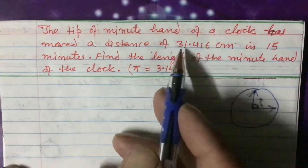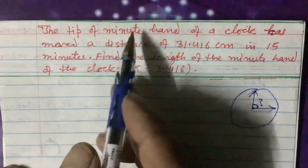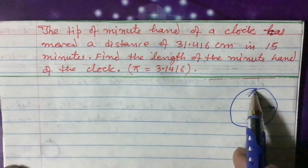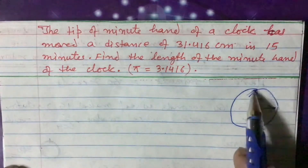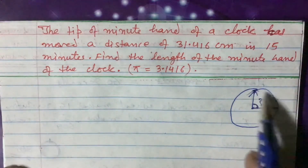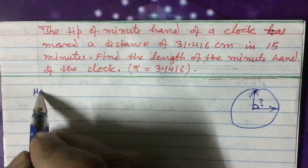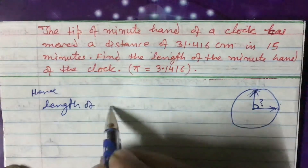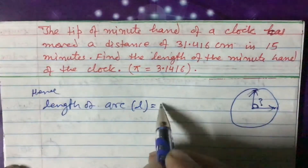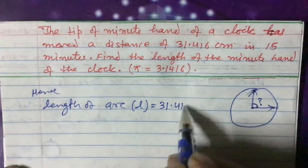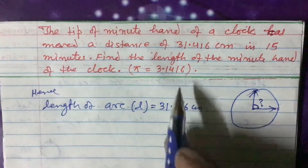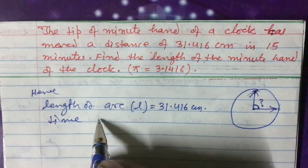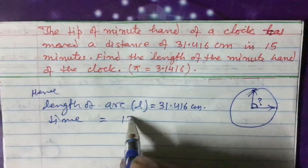Let us write down the given information. The tip of the minute hand has moved a distance — so this distance is an arc. Therefore, length of arc L equals 31.416 centimeters, and the time of the minute hand is 15 minutes. Both of these are given to us.